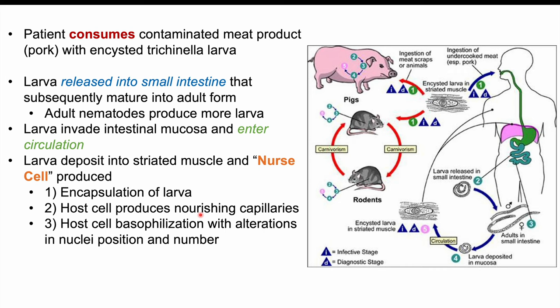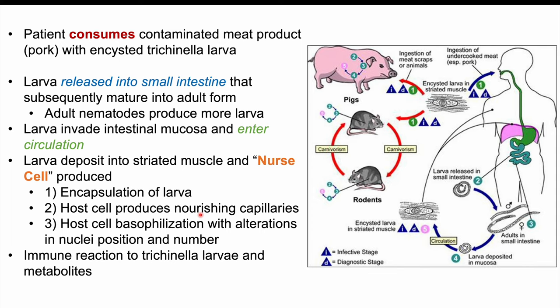There are alterations in the host cell — alterations in the nuclei position. If it is a multi-nucleated cell, there can be increases or decreases in number of nuclei, and the position of the nucleus itself may be shifted due to this larva being implanted into the patient's striated muscle. The immune system then reacts to the Trichinella larva and its metabolites, and this immune reaction causes many of the signs and symptoms discussed in upcoming slides.